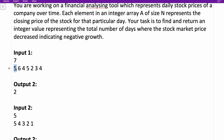We have to find the number of days where the stock price decreased from the previous day. On the second day the price was six — it increased. On the next day it decreased to four — count becomes one. Then it increased to five, then decreased to two — count becomes two. Then it increased to three and then to four. So total days where stock price decreased is two.